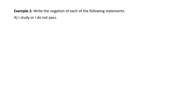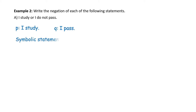Example — write the negation of each of the following statements. Part A: 'I study or I do not pass.' Let's put these symbolically. Let P be 'I study' and Q be 'I pass.' Now let's express 'I study or I do not pass' symbolically — that would be P or not Q.